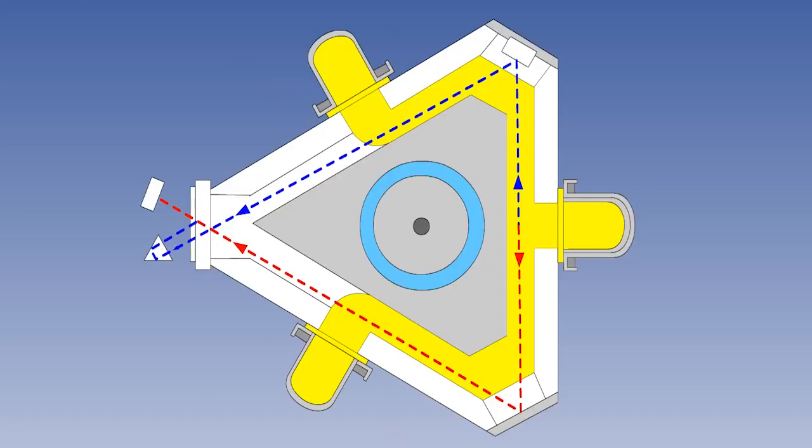By contrast, IRS uses ring laser gyros which have no moving parts. Over the last 40 years, it has become possible to miniaturize lasers down to a size small enough to use in aircraft. Look at the pattern of the laser light, which is shown in yellow here.